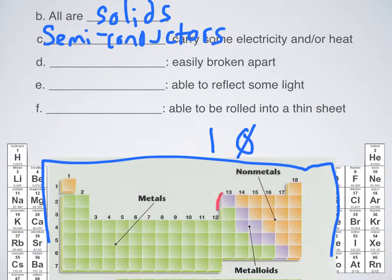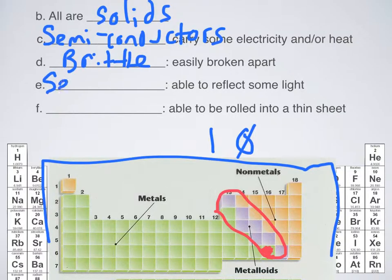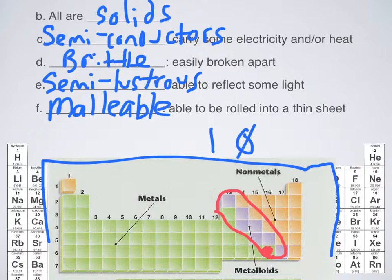In this picture, again, this gives you the list of metalloids. The only one that they don't include, but I do, is right here at the bottom, and I believe that's polonium. Easily broken apart. Now, you should recall that that was termed brittle. They're able to reflect sunlight, so they are semi-lustrous. And then last, but certainly not least, they're able to be rolled into a thin sheet, relatively speaking, and so they are also going to be considered malleable.